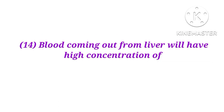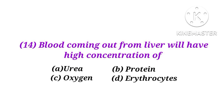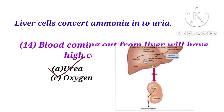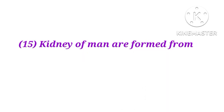Number 14. Blood coming out from the liver will have a high concentration of urea, protein, oxygen, or erythrocytes? The answer is A. Liver cells convert ammonia into urea, so blood coming out from the liver will have a high concentration of urea.